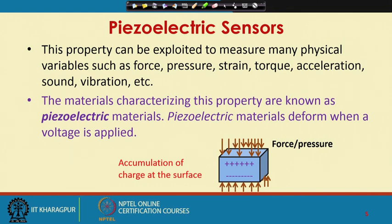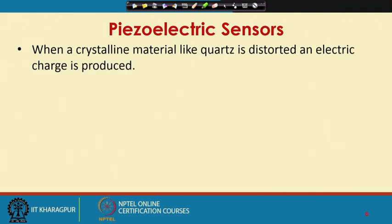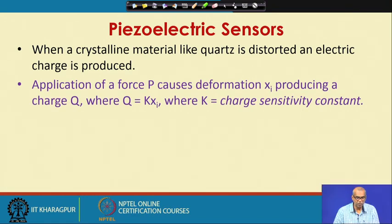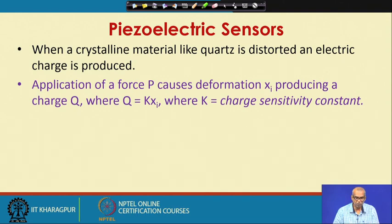This schematic shows accumulation of charge at the surface due to application of force or pressure. When a crystalline material like quartz is distorted, an electrical charge is produced. Application of a force P causes deformation xi producing a charge q. Q is directly proportional to force P and the deformation is also proportional to the amount of force being imposed. So you can write charge q is proportional to the deformation xi.